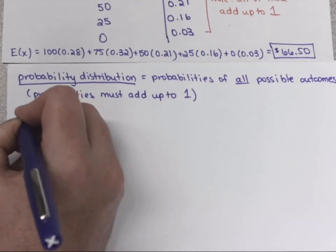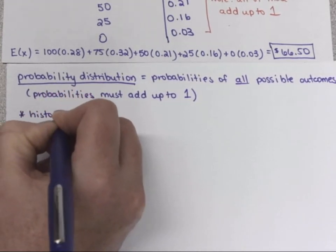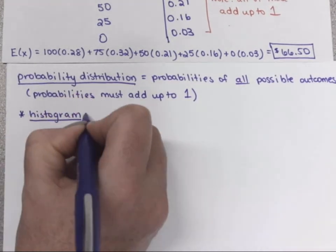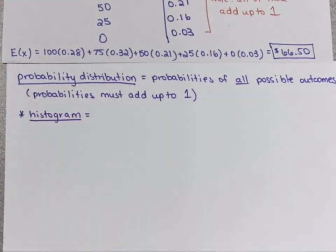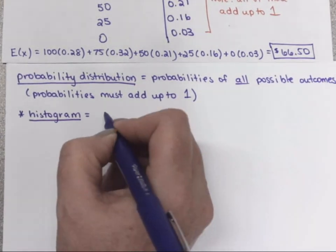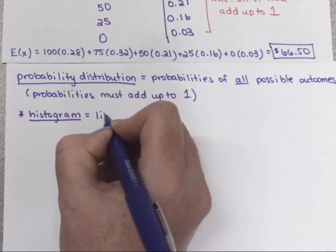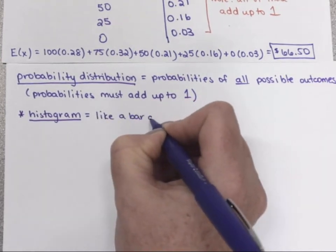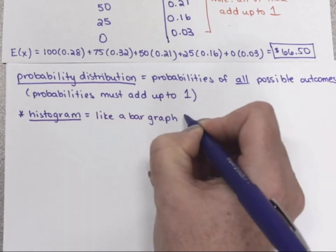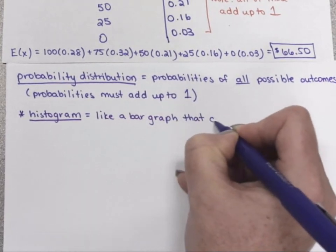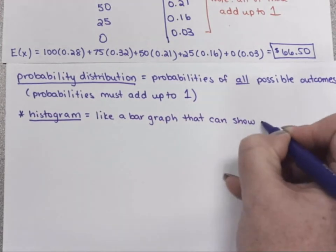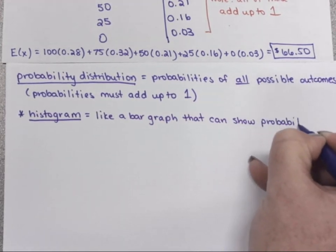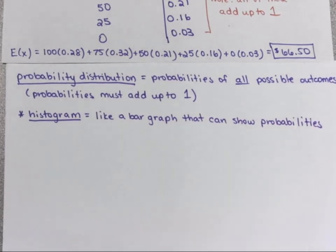One way you can show the probabilities is in a table format like I just showed you. Another way is through a histogram. You probably have seen a histogram before when talking about data in other classes. It's sort of a bar graph — technically a special kind of bar graph that can show probabilities. Histograms are usually for number-type data.